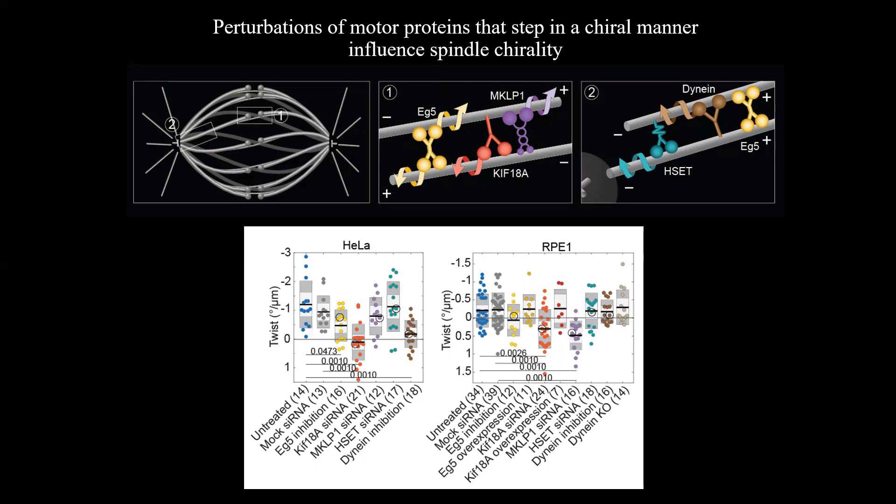Depletion of MKLP1 in purple did not change twist in HeLa cells, but significantly changed the twist in RPE1 cells, where 94% of spindles were twisted in a right-handed direction. Inhibition of dynein in dark brown abolished the twist in HeLa cells, but did not change the twist in RPE1 cells. We conclude that EG5, KIF18a, MKLP1, and dynein regulate the torque within the spindle, which lead to the twisted shape of microtubule bundles, but their contribution differs in different cell lines.